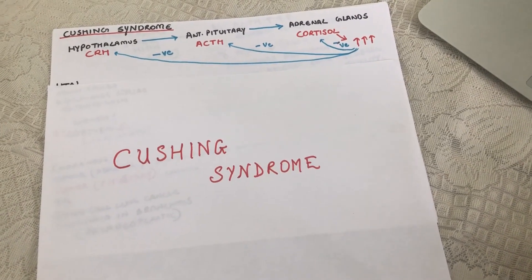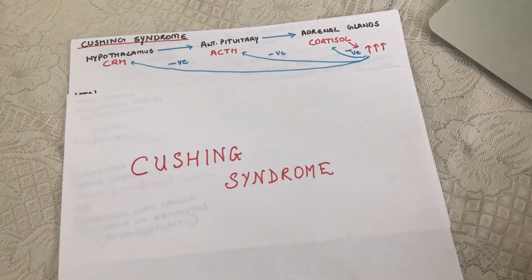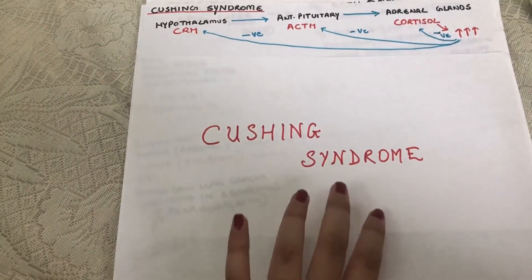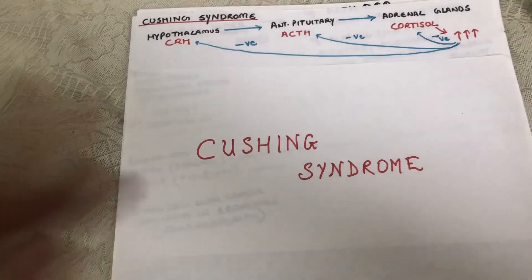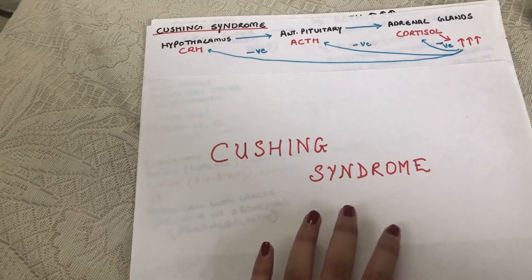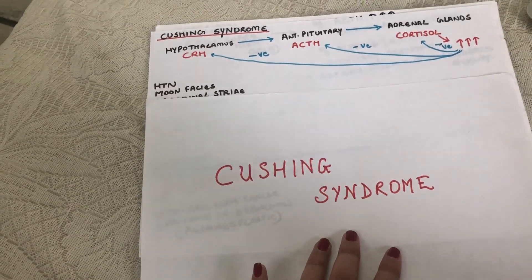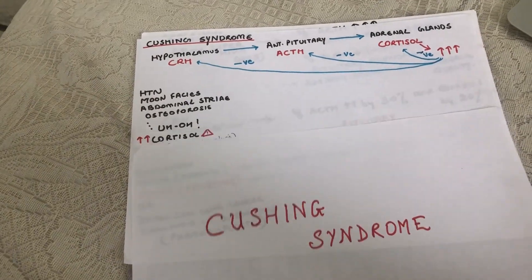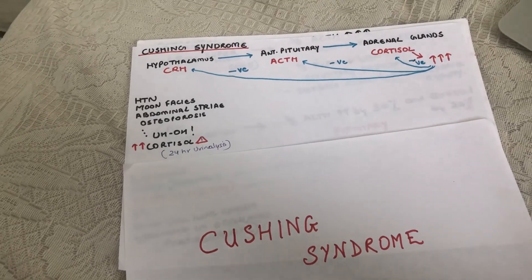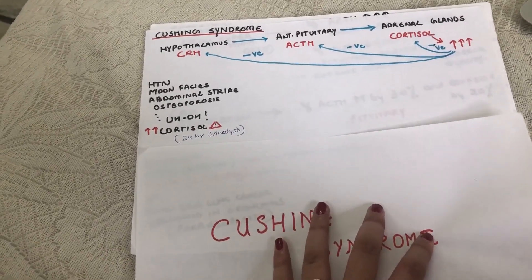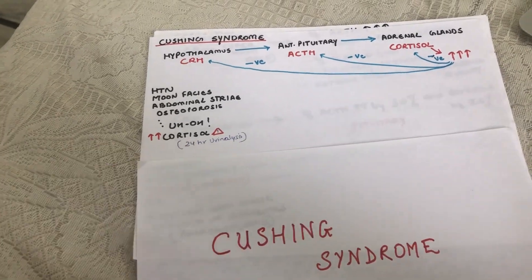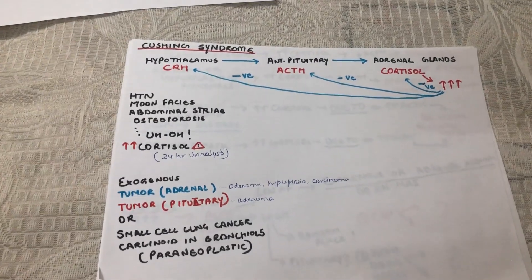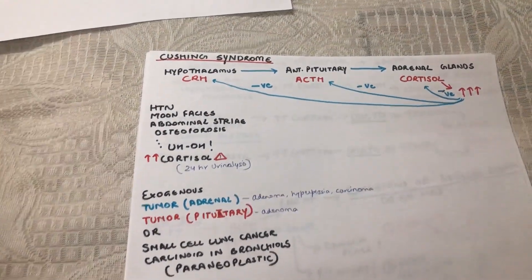When the body cannot control excess cortisol, the result is Cushing syndrome — basically excess cortisol in your system. It presents with hypertension, moon facies, excess fat around the face, abdominal striae, osteoporosis, amenorrhea, and truncal obesity. You can diagnose it with a 24-hour urine analysis or a midnight salivary cortisol test. Now we need to figure out what's causing the increase.